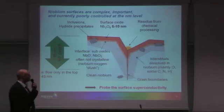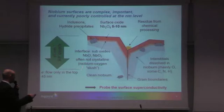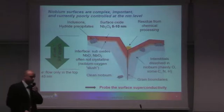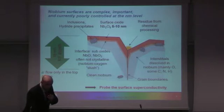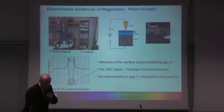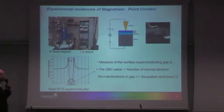The screening Meissner current flows in the first 45 or so nanometers from the surface, a region in which there are a lot of impurities, defects, and oxides — several forms of oxides. Niobium is well known to have really poor-quality oxides, as compared to other metals.